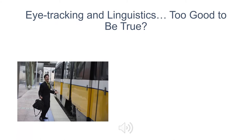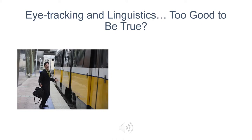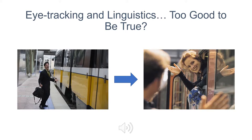Imagine arriving in a foreign country and needing to navigate the train system to get from the airport to your hotel. Wouldn't it be incredible if the train schedule could switch to your native language so you could simply read and find out when the next train arrives instead of looking for someone who can translate the schedule for you? Sounds too good to be true, but this could be a very real possibility in the future thanks to the use of eye tracking in linguistic research.